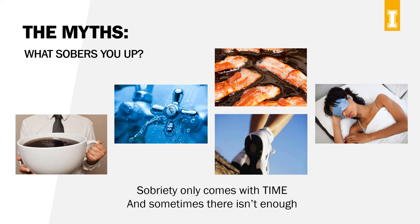So how can a drunk person sober up? By waiting. Sobriety only comes with time unless there is a medical intervention like having a stomach pumped. The liver can only process alcohol at about 75 minutes per standard drink, and there really isn't a way to make the liver speed up. For example, if someone drank until 2am and had a BAC of 0.2, their BAC wouldn't reach the legal driving limit of 0.08 until after 10am, and all the alcohol wouldn't be out of their system until 4pm that afternoon.